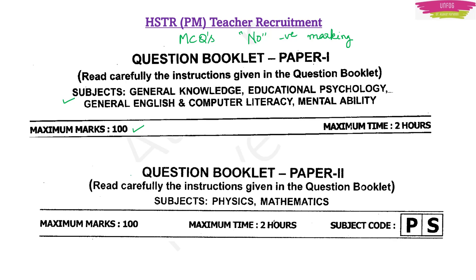Paper 2 is subject-specific. If you are a PM method aspirant, you will have Physics and Mathematics. If you are a CB method aspirant, you will have Chemistry and Biology. Paper 2 also has 100 marks and a two-hour duration, all MCQ based. For PM method, 40 marks will be for Physics, 40 marks for Mathematics, and 20 marks will be based on methodology for PM method.